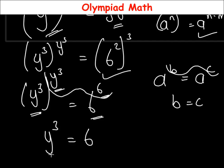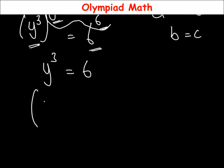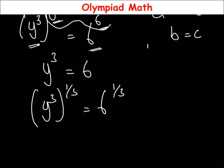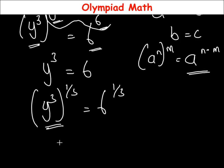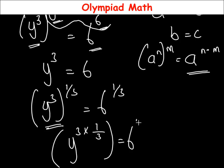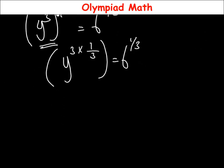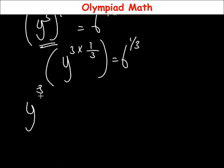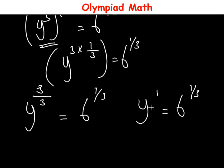Comparing exponents, y raised to power 3 equals 6. To solve for y, we eliminate the power 3 by multiplying both sides by power 1 over 3. Applying the identity a raised to power n power of m equals a raised to power n times m: y raised to power 3 times 1 over 3 equals 6 raised to power 1 over 3. So 3 times 1 over 3 equals 1, giving us y raised to power 1.